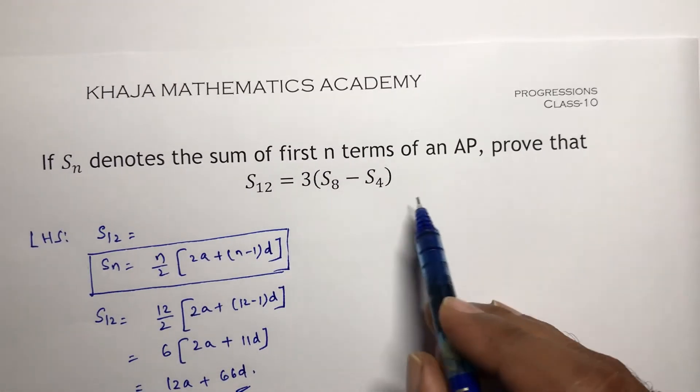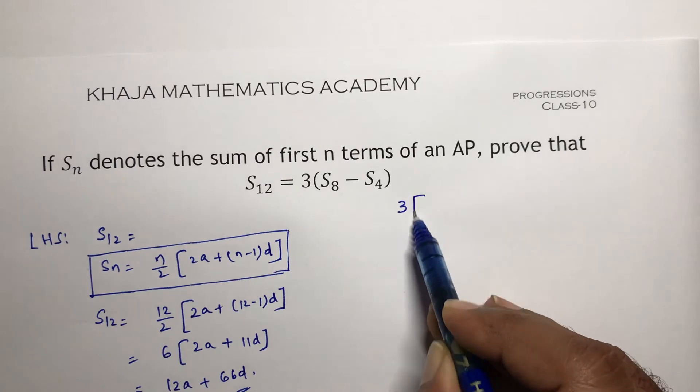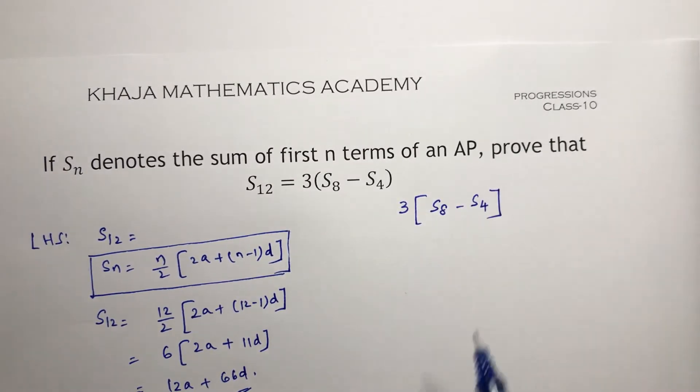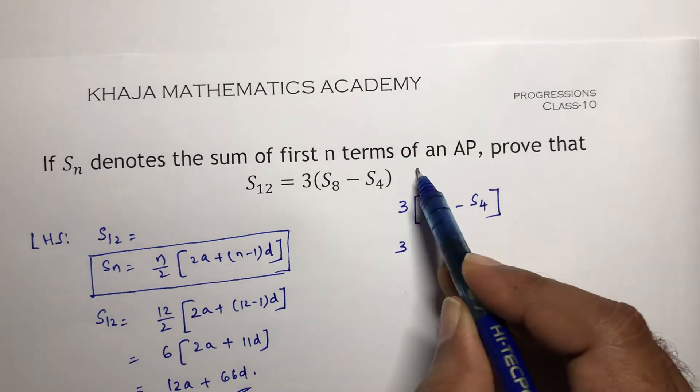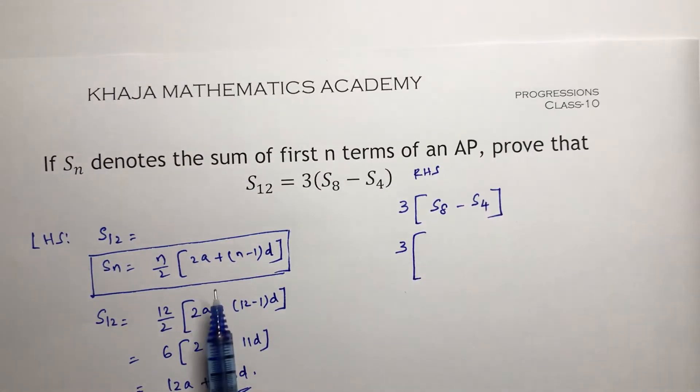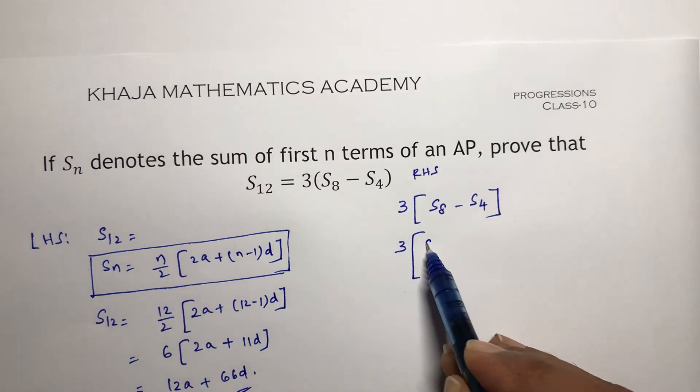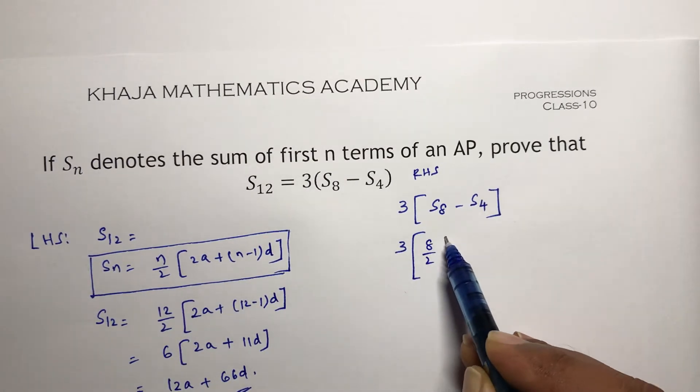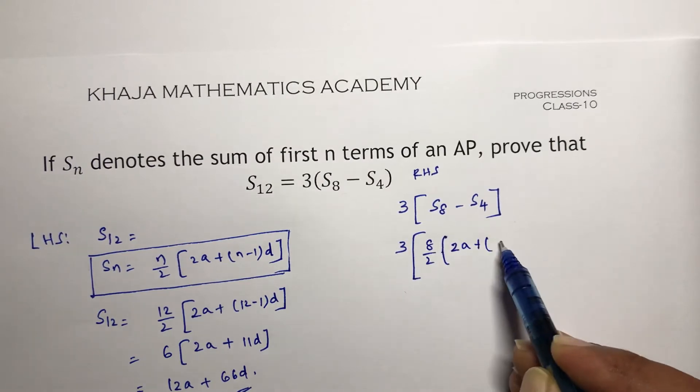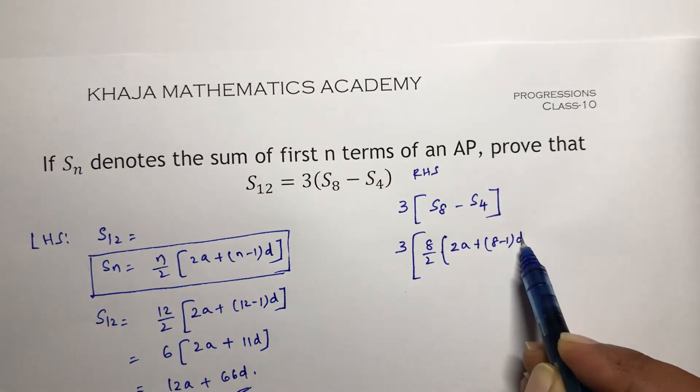Now I will calculate the RHS part, that is 3 times S8 minus S4. So 3 times, now this is RHS. S8, sum of n terms formula is n by 2, so 8 by 2 into 2A plus 8 minus 1 into D.